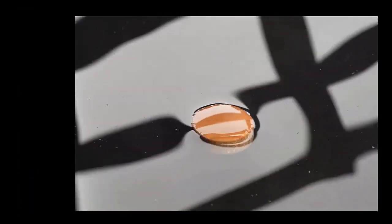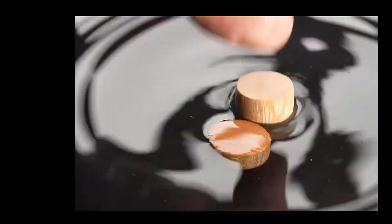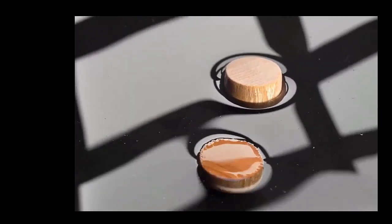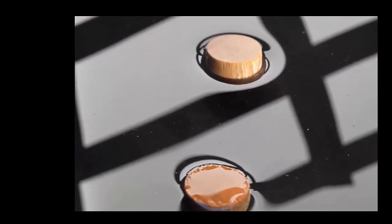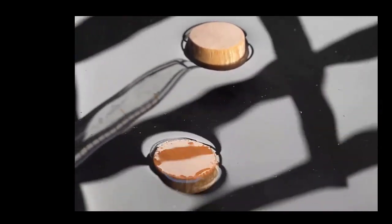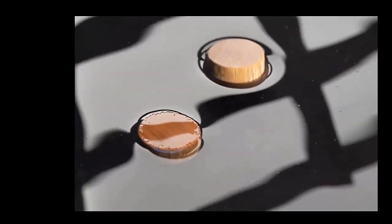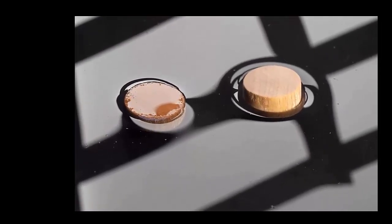So this is the uncoated disc floating in water and this is the hydrophobic disc. Here's what puzzles me about this. You can see, or I hope you can see, that the hydrophobic disc floats much higher in the water. But according to standard Archimedes principle, both discs should float at the same level.